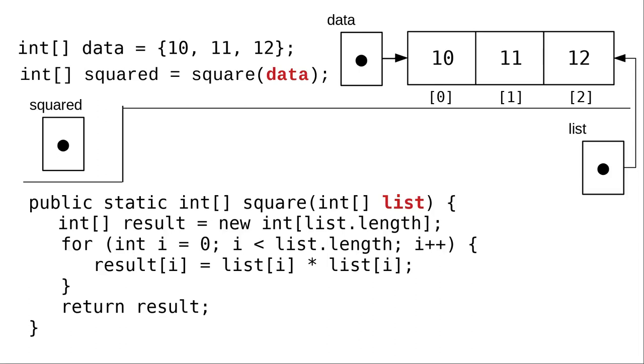When we make the call, just as before, list becomes a copy of the reference to data's area of memory.